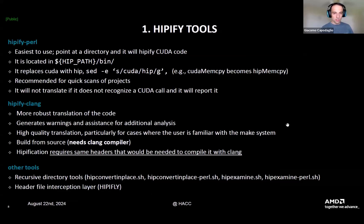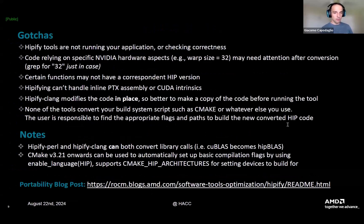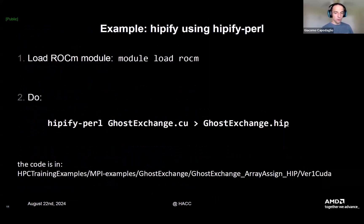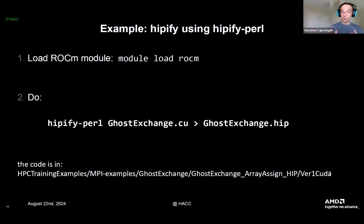The idea is to start with the HIPify tools. If you clone the repo and follow the link to ghost-exchange, array-assign, hip, verb-one, CUDA, you can find a version of this code that uses CUDA calls. We're assuming your application is written in CUDA and you want to HIPify it, then run it on GPUs and optimize and profile. You can do a HIPify-perl and pipe to a new file, and that would produce code with HIP calls.